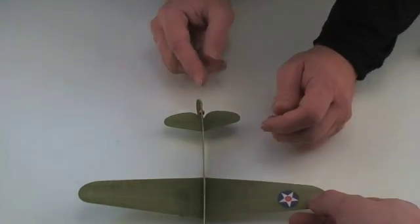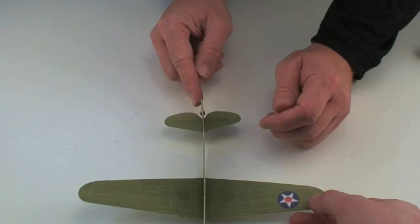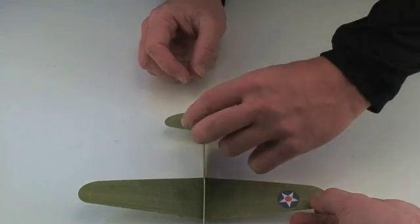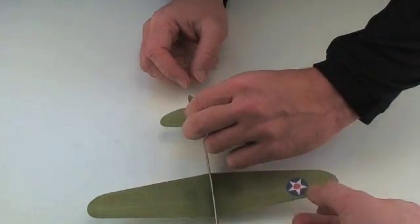Usually on a model we'd like the hinge to return to center. This one's not really returning to center. As you can see, the rudder is leaning to the right side there.